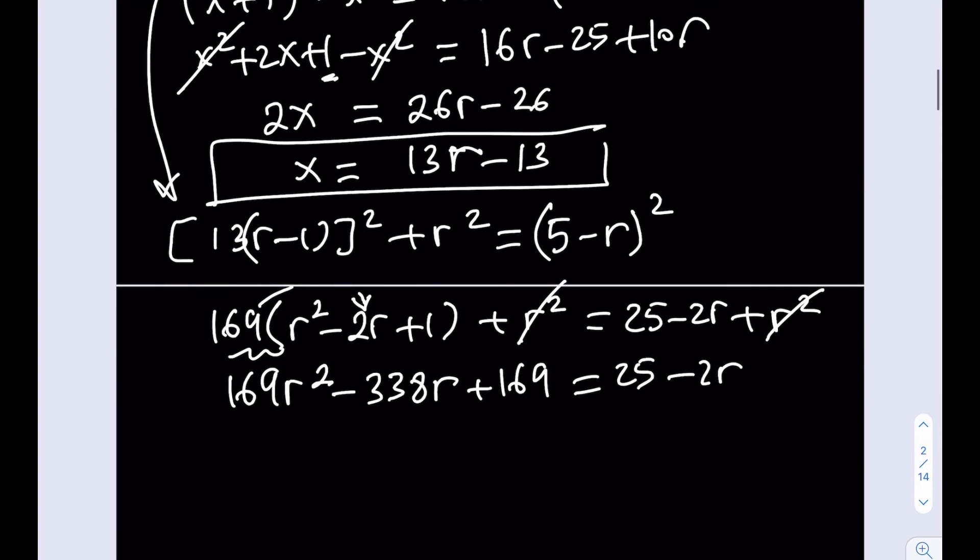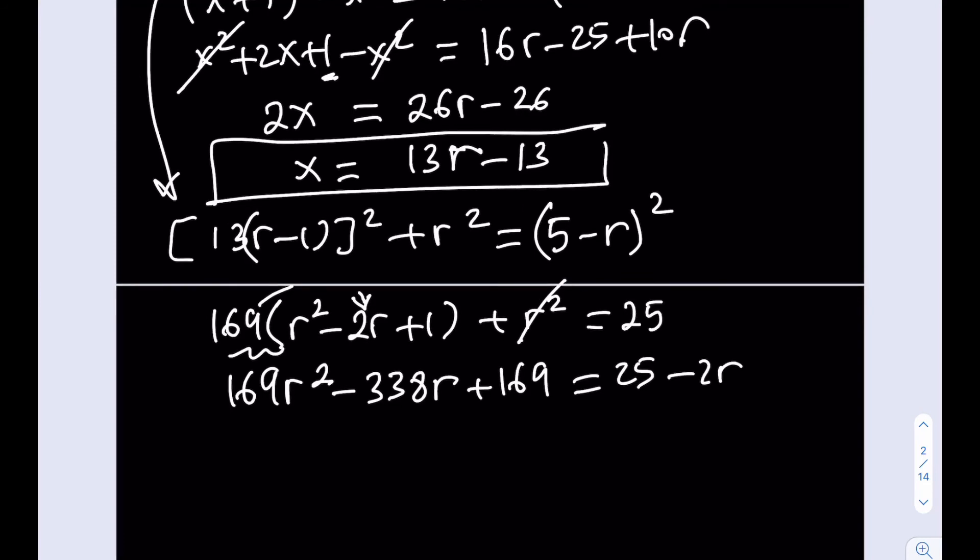Let's bring the numbers over here. I'm going to add 10r to both sides. So that's going to become minus 328r. And then you subtract the 25 from the 169, and that's going to give you 144, and this is going to be my quadratic equation that I need to solve: 169r squared minus 328r plus 144 equals 0.